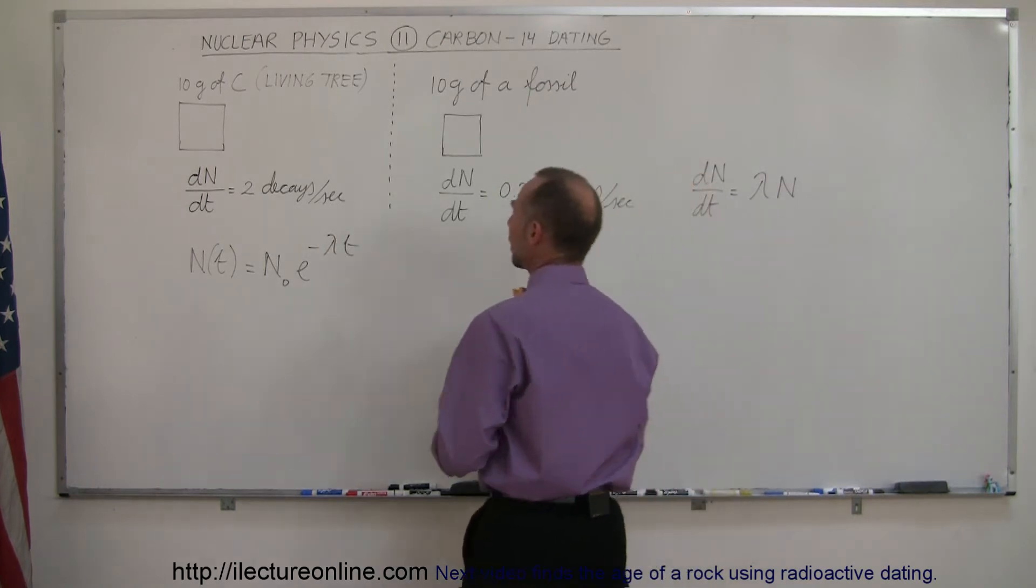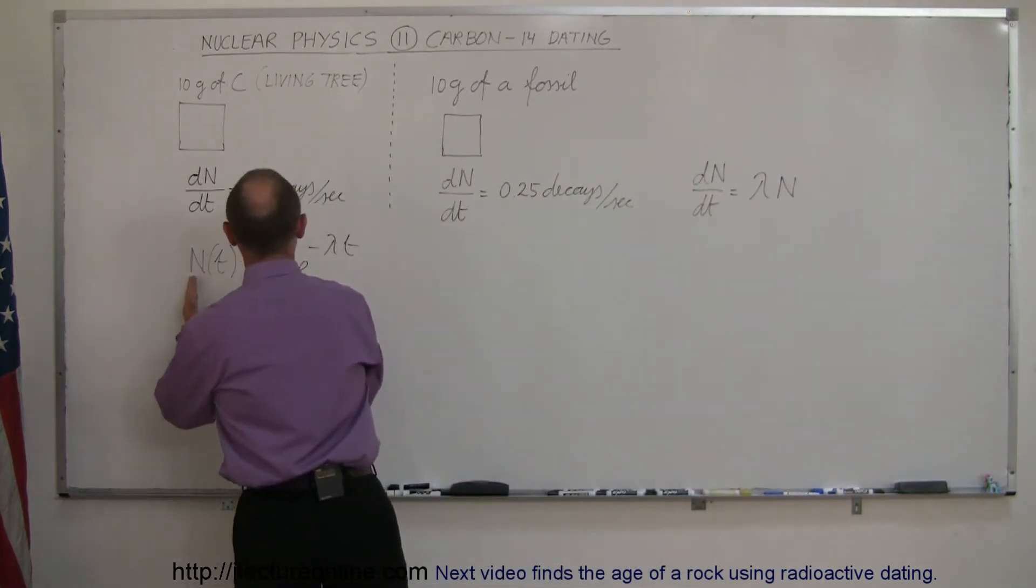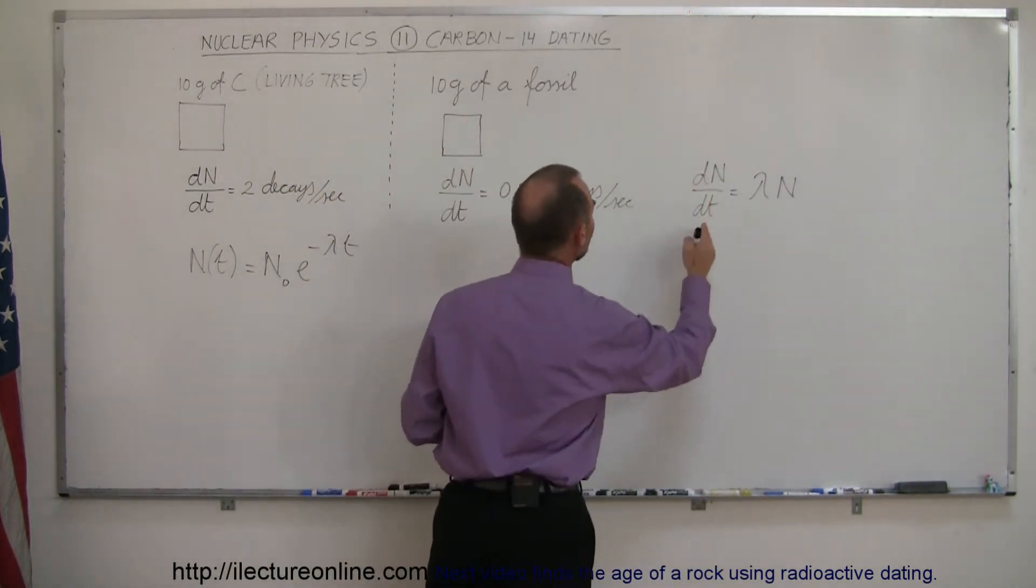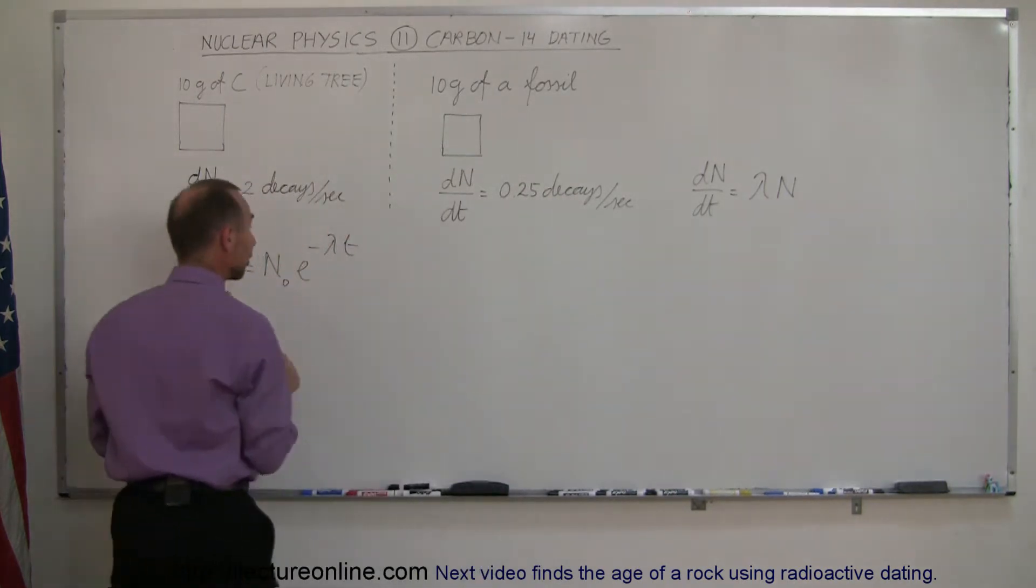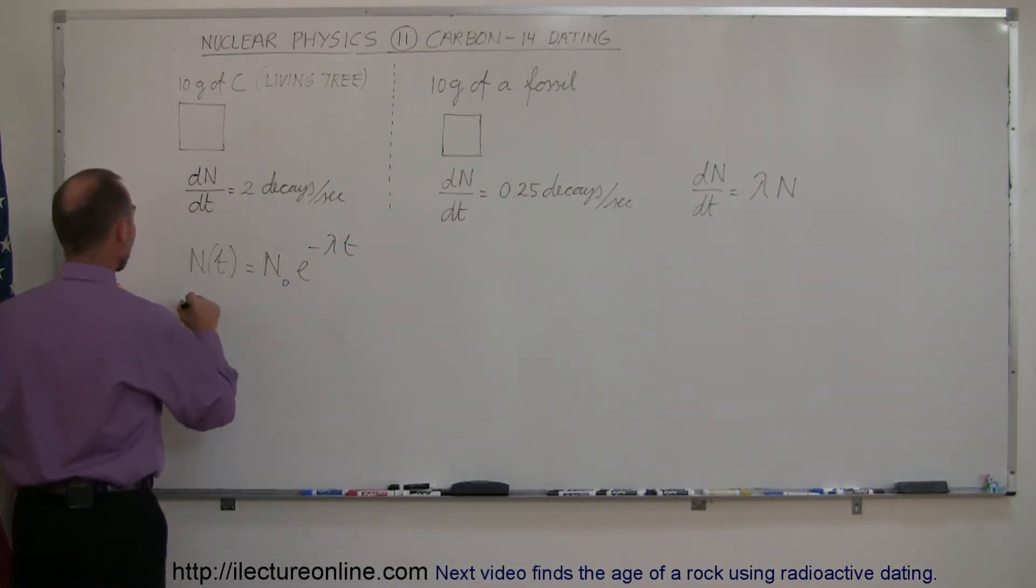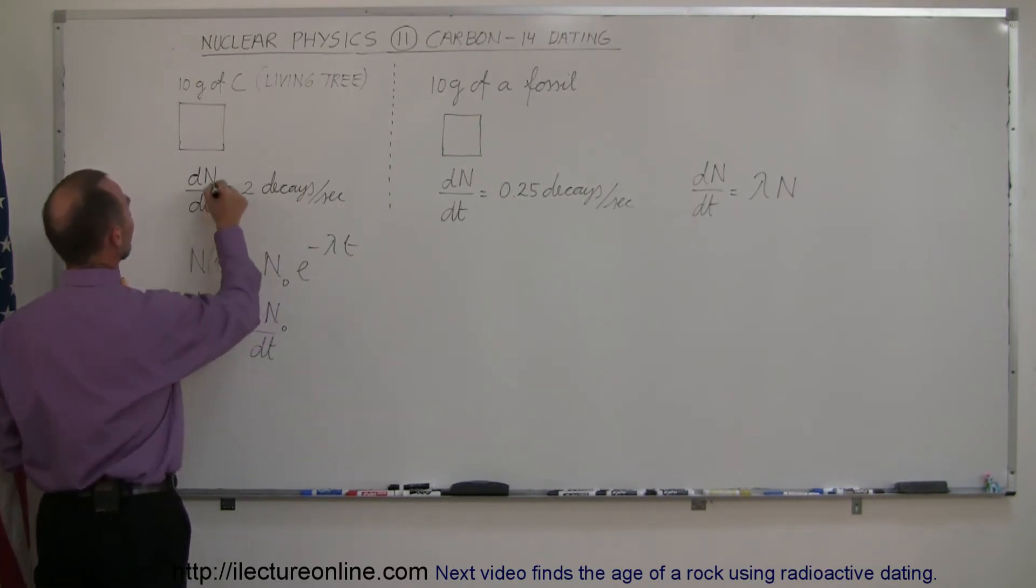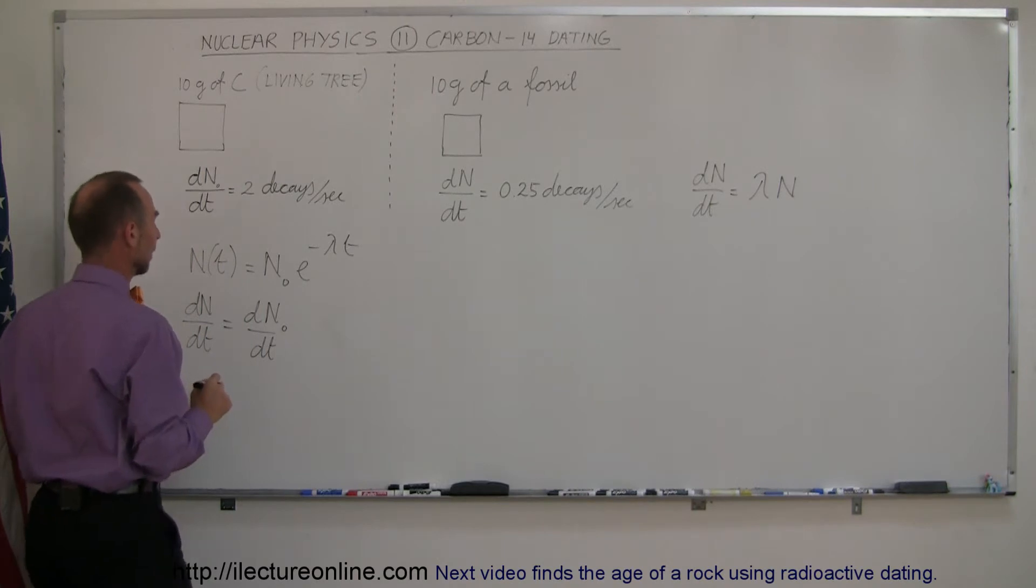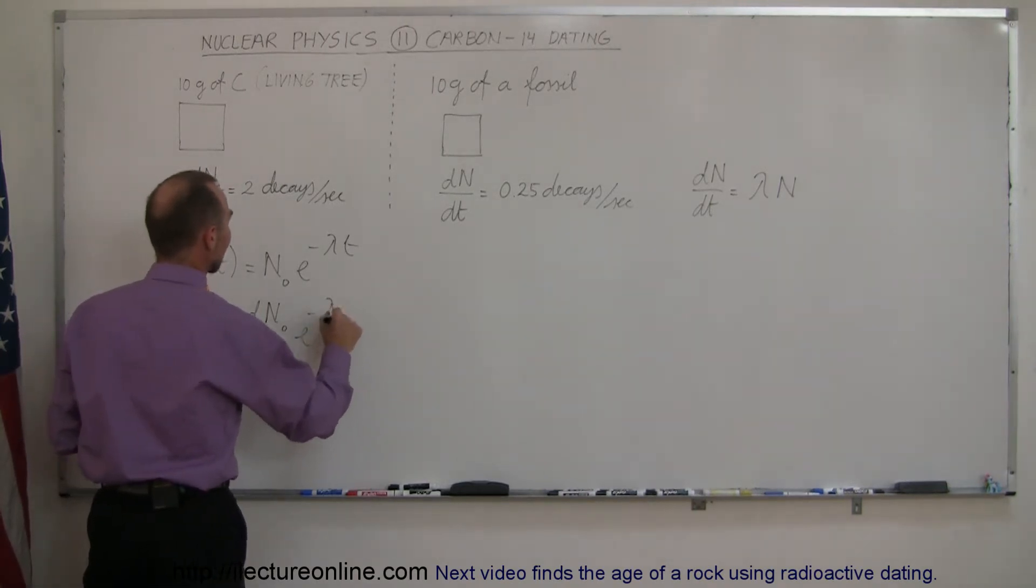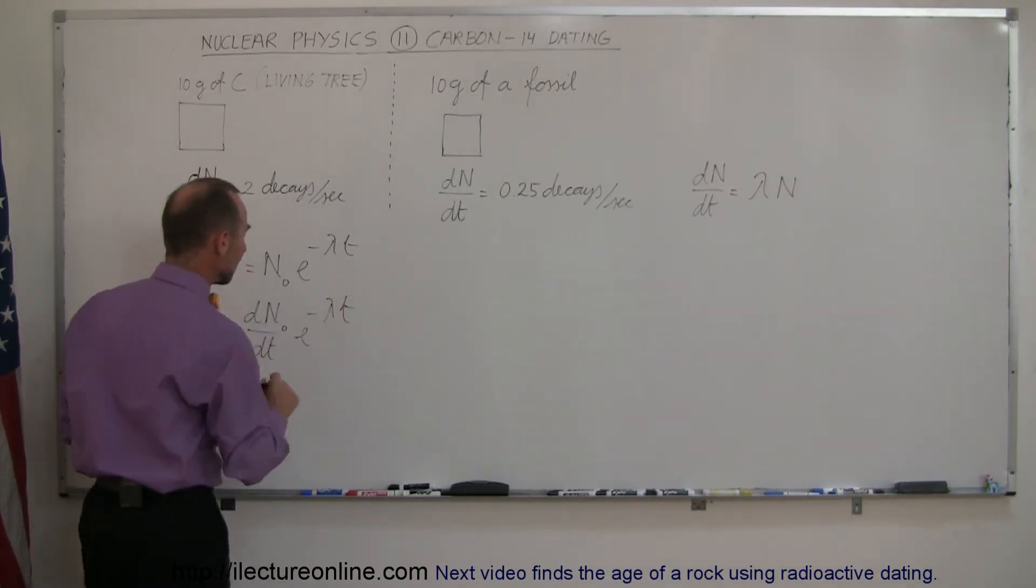So we can then replace the N and the N₀ by the dN/dt and the dN/dt₀, because they're proportional anyway. So we can write that the rate, the dN/dt of the sample, is equal to the dN/dt of the original test sample times e to the minus lambda times t.